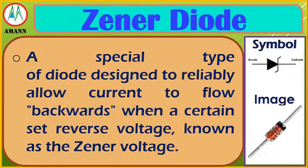Zener diode: a special type of diode designed to reliably allow current to flow backwards when a certain reverse voltage, known as the Zener voltage, is reached.